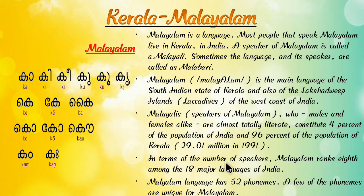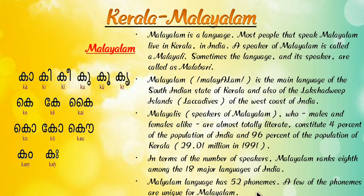In terms of the number of speakers, Malayalam ranks 18th among the 18 major languages of India. The Malayalam language has 52 phonemes and a few phonemes are unique to Malayalam. Malayalam language is spoken by the people of Kerala.